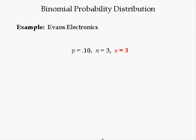Now write what we know. We know the probability of success (leaving the company) is 0.1. The number of trials is 3. And the number of these three that are successes is 3. We plug these into the binomial equation.